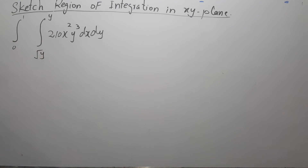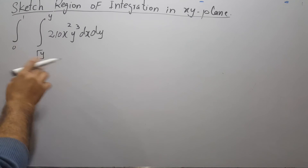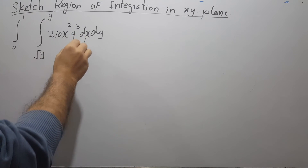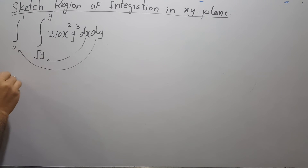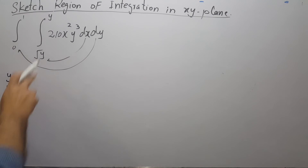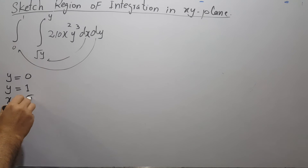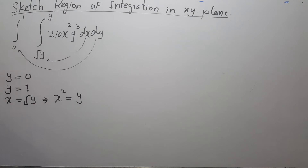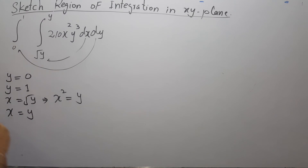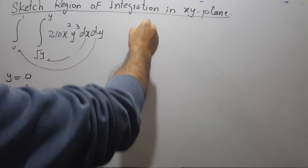Now for the second integral, the region of integration has Y limits from 0 to 1. The lower limit of X is x = √y, which when squared gives x² = y — a parabola. The upper limit is x = y, which is a straight line. You sketch these curves to find the region of integration.